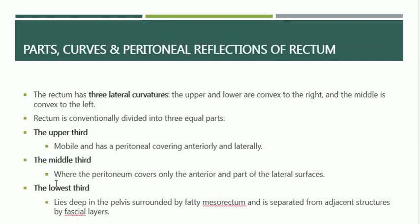Regarding the curves and peritoneal reflection of the rectum — these are important. The rectum has three lateral curvatures. The upper and lower curvatures are convex towards the right side, and the middle curvature is convex to the left. So in the upper one-third and lower one-third in coronal section, the curve is convex to the right, and the middle one is convex to the left.